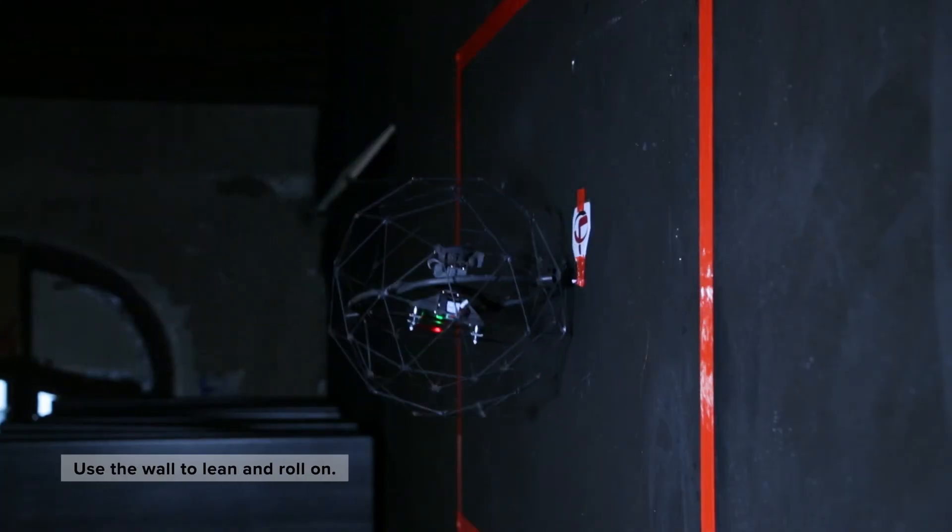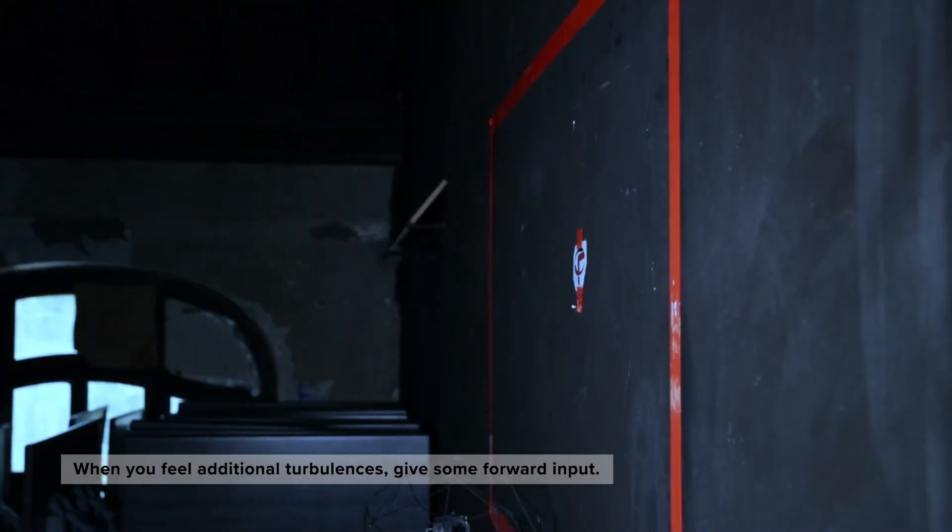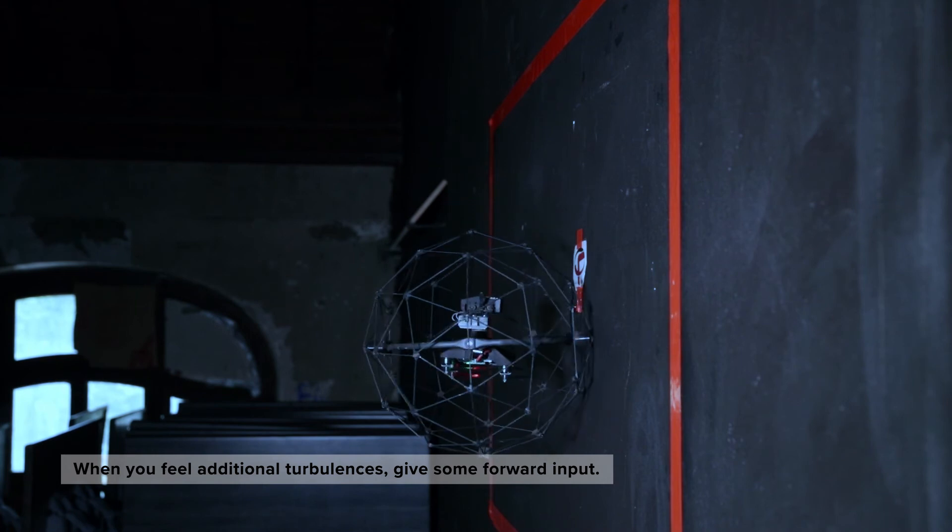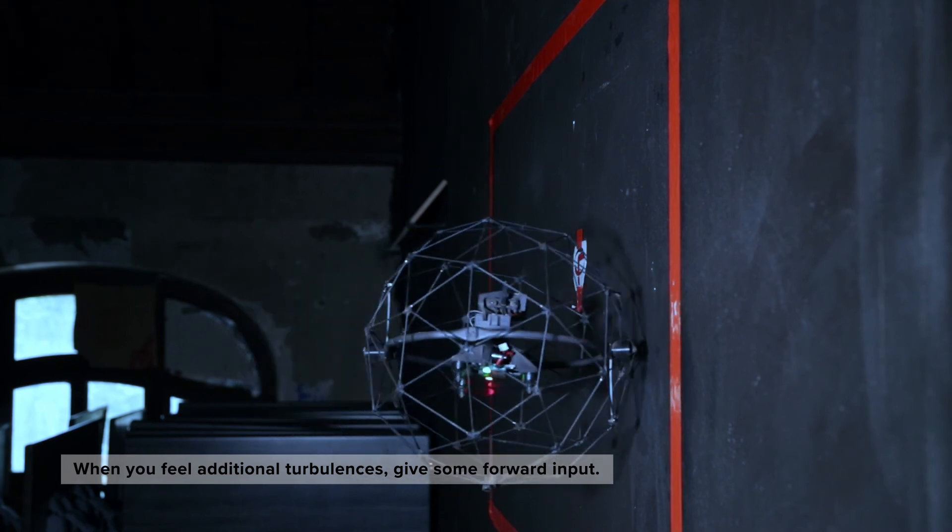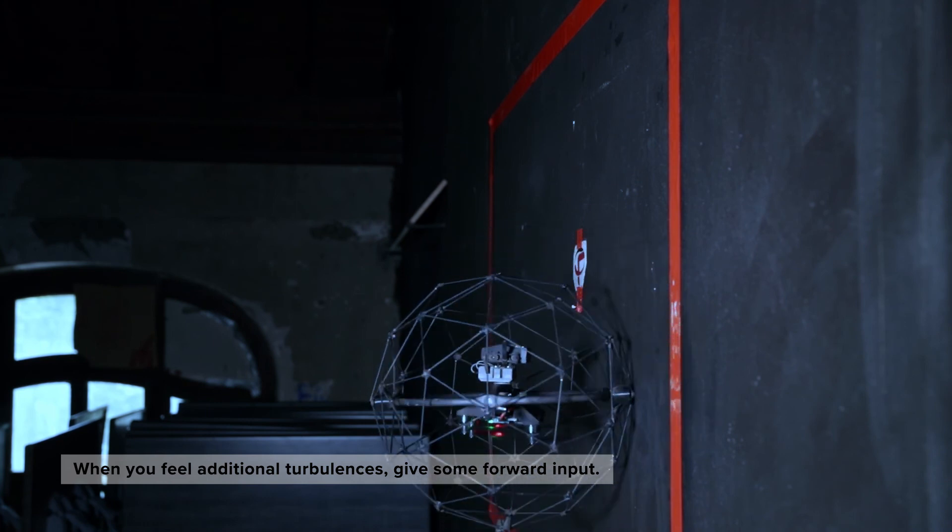As the drone approaches your objective you can use the wall to lean and roll on. If you fly close to the wall you might feel additional turbulences and the drone is pushed away from the wall. Give some forward input and try to stay as close to the wall as possible.